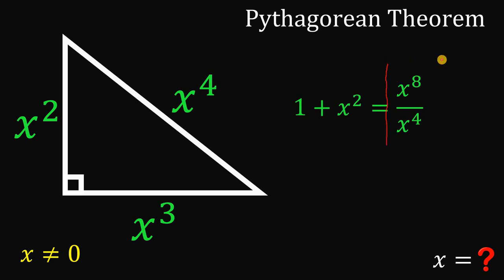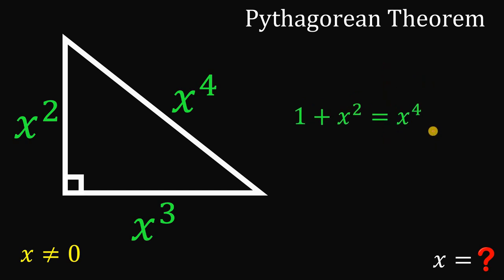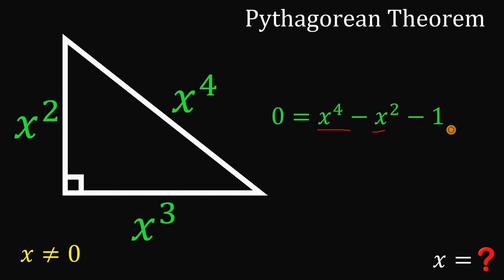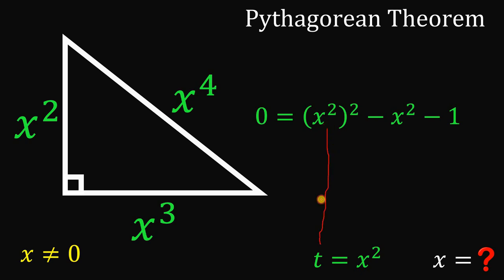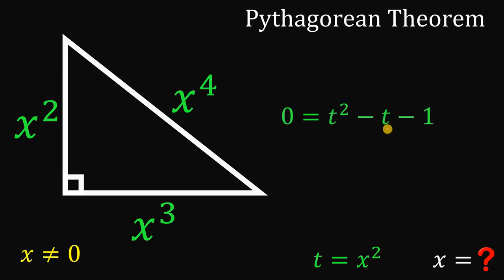Rearranging and equating to 0, we have 0 equals x raised to the fourth power minus x squared minus 1. Notice that x raised to the fourth power can be written as x squared, raised to the power of 2. Since we have x squared appearing multiple times, let's substitute t for x squared. This gives us the quadratic equation: 0 equals t squared minus t minus 1.